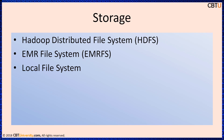The local file system refers to the locally connected disk. When you create a Hadoop cluster, each node is created from an Amazon EC2 instance that comes with a pre-configured block of pre-attached disk storage called an instance store. Data on instance store volumes persists only during the lifecycle of its Amazon EC2 instance.